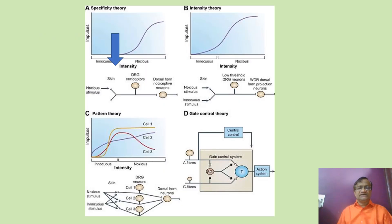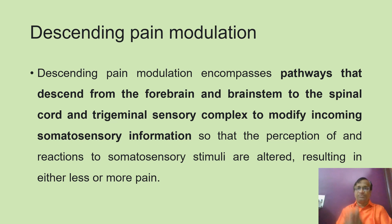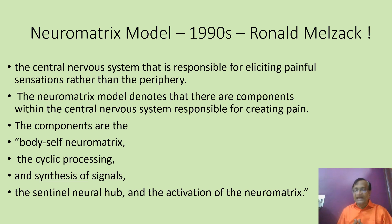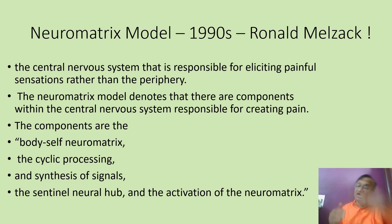Now we have covered rate control theory, intensity theory, pattern theory, and specificity theory. There is also descending pain modulation, which will be a separate video. It acts through the periaqueductal gray, locus coeruleus, and nucleus raphe magnus, using catecholamines, 5-HT, and opioids as chemical mediators. These three chemical substances act through the periaqueductal gray, nucleus raphe magnus, and locus coeruleus — this is the descending pain modulation topic.